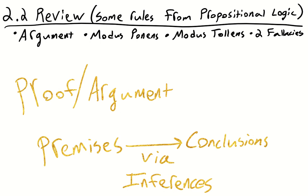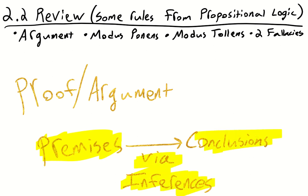Oftentimes when we're watching politicians on television or YouTube, they aren't making arguments at all. Instead, they're just making assertions or emoting their feelings over numerous complex issues. At any rate, a proof takes given propositions — premises — and then tries to pull out of those premises through various rules of inference to derive new sentences, new propositions, to reach some conclusions.